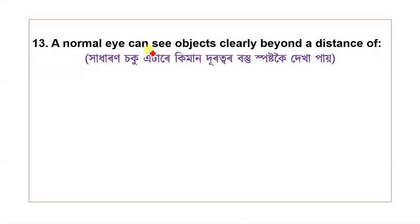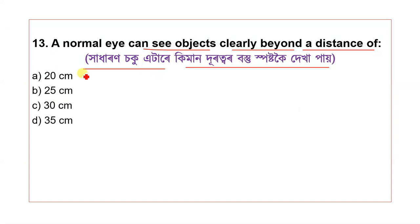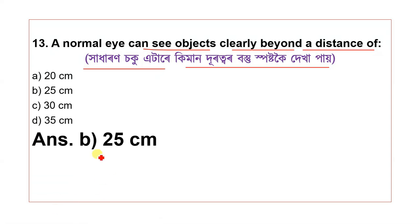Question 13: A normal eye can see objects clearly beyond a distance of how much? The options are 20 cm, 25 cm, 30 cm, and 35 cm. The correct answer is 25 cm.